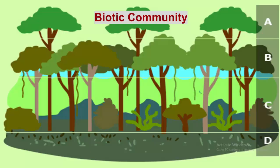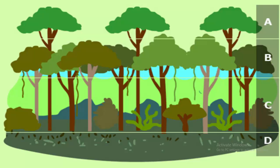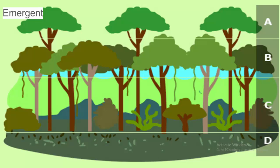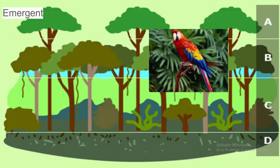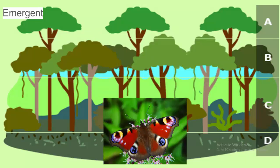The first thing you need to know about the biotic community of a tropical rainforest is that there are four layers. The uppermost layer is the emergent layer, which has trees that are 100 to 240 feet tall with umbrella-shaped canopies. Here you'll find birds like toucans and macaws, and all sorts of butterflies.